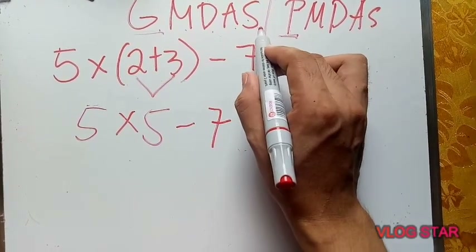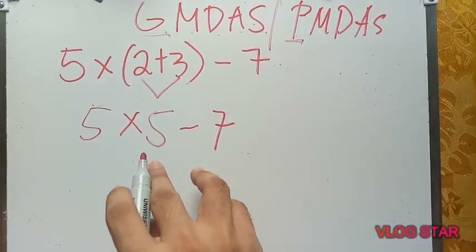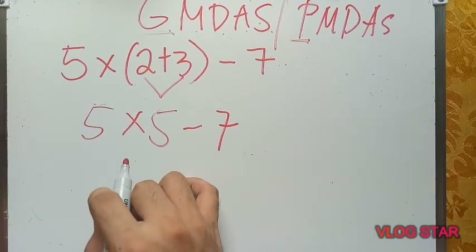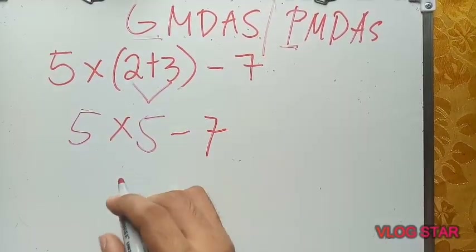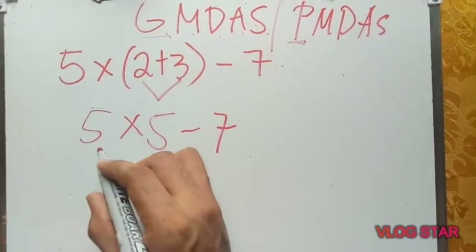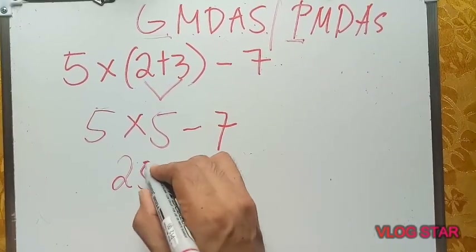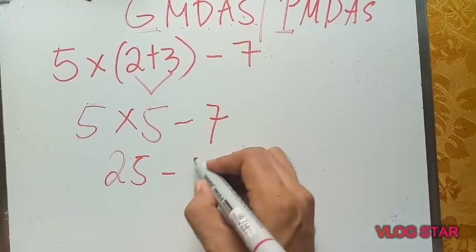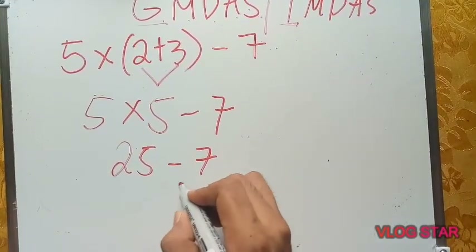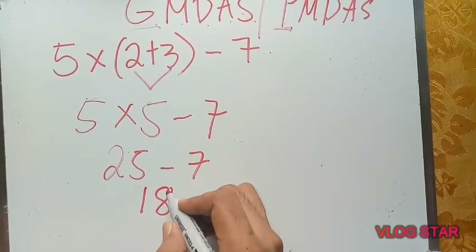What should we do next — subtract first or multiply? We should multiply first. 5 times 5 equals 25, then 25 minus 7. The answer is 18.